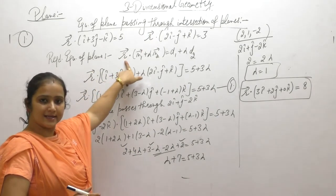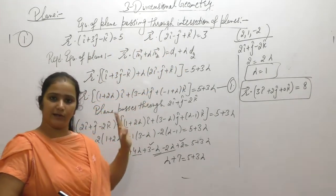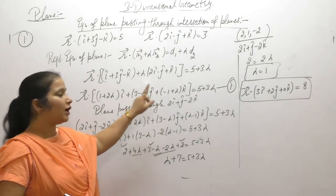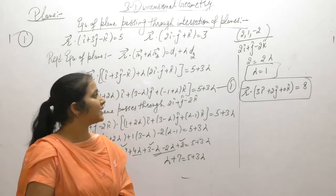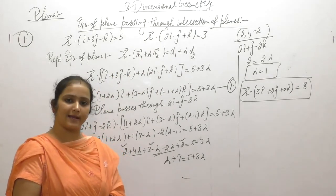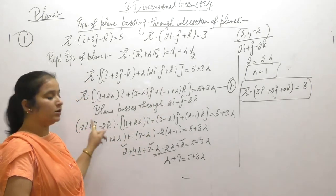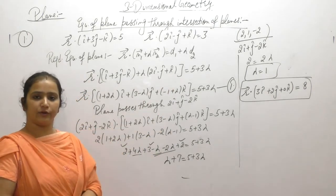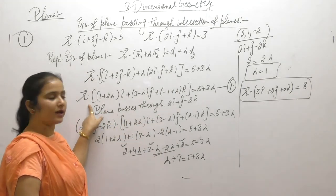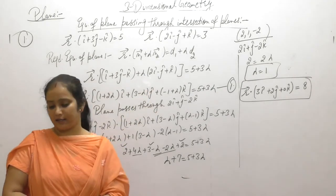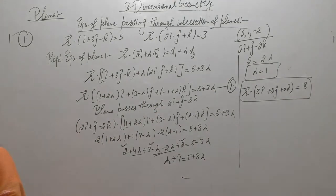To summarize the intersection method: write the equation of the plane through the intersection using r dot (n1 plus lambda n2) equals d1 plus lambda d2. Substitute the given point for r to find lambda. Then substitute lambda back into equation 1 to get the required plane equation.